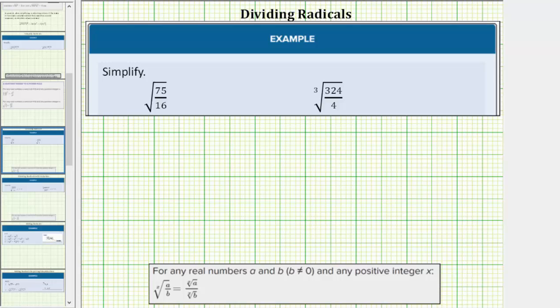We are asked to simplify the given radical expressions. A radical expression is not considered simplified if there's a fraction under the radical or if there's a radical in the denominator.